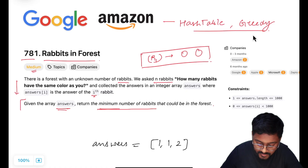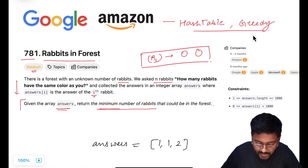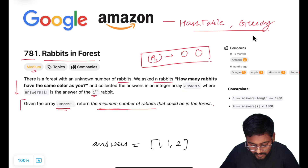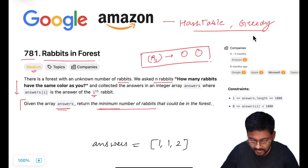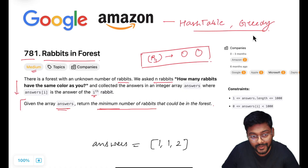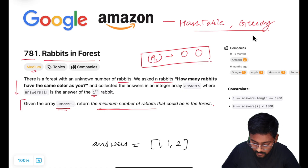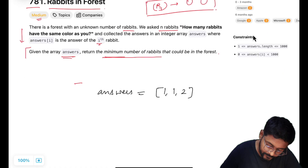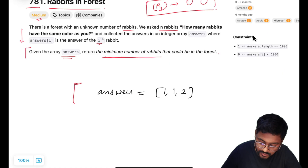So this is the problem statement: we asked n rabbits how many rabbits have the same color as you, their answers are captured in the answers array, and we have to tell what is the least — minimum possibility of rabbits in the forest. Now let's have a look at this example.